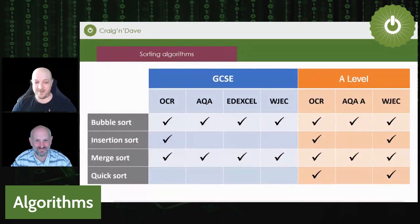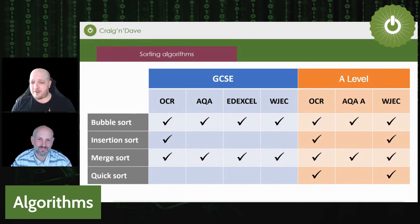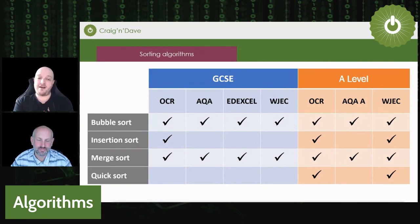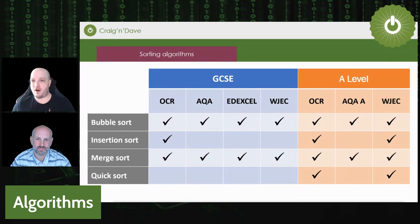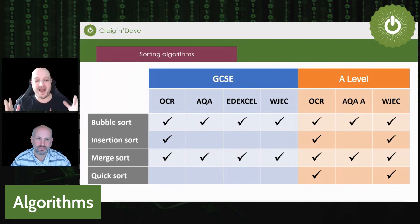We're going to focus specifically on sorting algorithms today, because there are so many algorithms out there. You also learn about searching algorithms and, at A-level, pathfinding algorithms, but let's just focus on sorting. On screen is a list of the various sorting algorithms required at GCSE or A-level for several major exam boards in England. Typically everyone learns bubble sort and merge sort, and at A-level you pick up a couple more depending on your exam board.